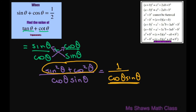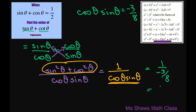We already know that cosine of theta times sine of theta equals negative 3/8, so this becomes 1 divided by negative 3/8, which equals negative 8/3. Thank you, have a nice day, bye bye.